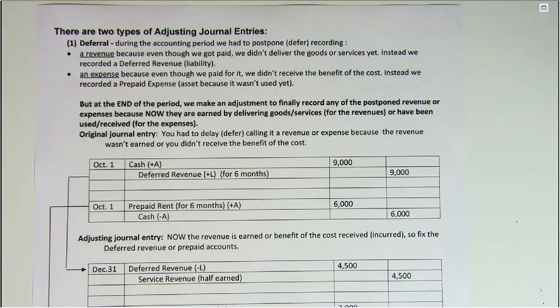You haven't used them yet; you'll be using them in the future. Then, when you use the supplies up, you have received the benefit of that cost, so they become expenses. And your adjusting entry will move them out of the asset account supplies and into an expense account, supplies expense.